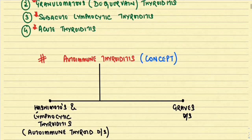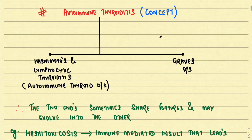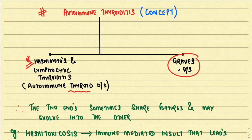Let us start with autoimmune thyroiditis. Autoimmune thyroiditis has two extremes: one end is marked by Hashimoto's and lymphocytic thyroiditis, also called autoimmune thyroid disease, and on the other end we have Graves' disease. These two ends sometimes share features and may evolve into each other — Graves' may give rise to Hashimoto's or vice versa.